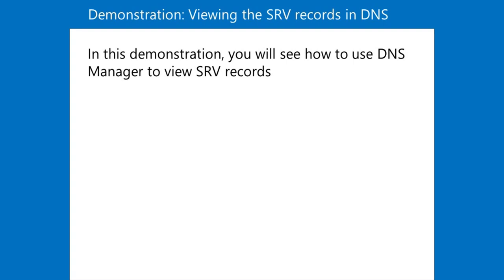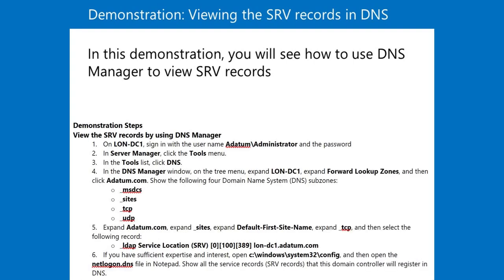Note that because domain controllers register SRV records in different ways, you can find an alternative if the preferred domain controller is not available. Alternatively, you can go to C:\Windows\System32\config, open netlogon.dns in Notepad, and show all the SRV records that each domain controller will register in DNS.